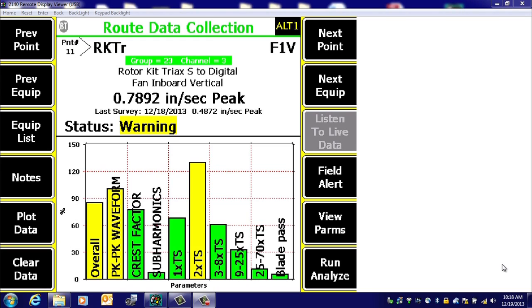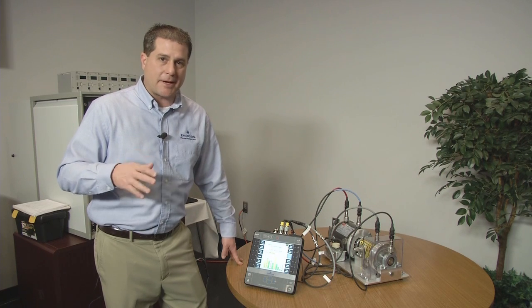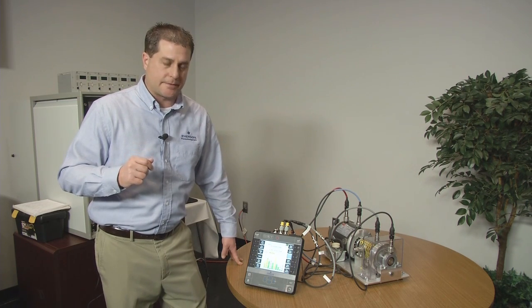And so let's say I just collected this data off this machine and you can see a high two times running speed turning speed peak here. And that tells us, well, maybe I'm suspecting a misalignment condition on this machine.